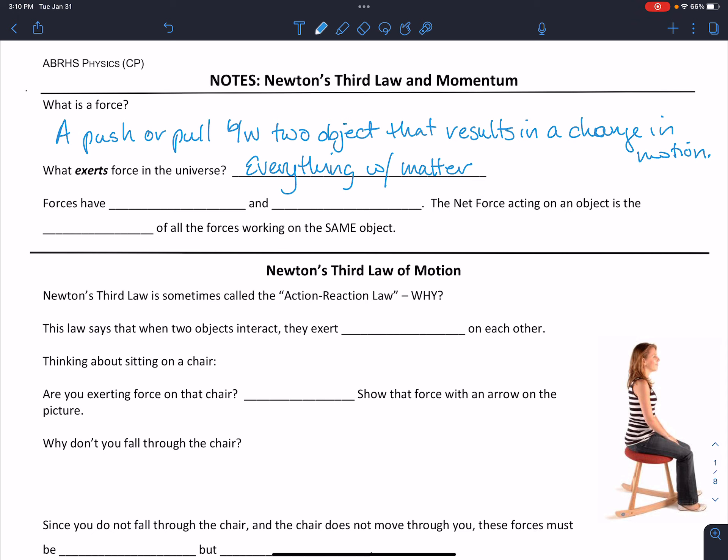Although there could be some argument about magnetism, but we'll deal with that later. Forces have magnitude, which means a numerical value, and they have direction, which tells us which direction they are moving in, which makes them a vector quantity. The net force that's acting on an object is the sum of all of the forces that are working on the same object.